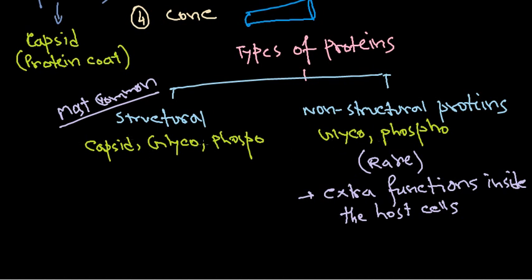If we are talking about most viruses, they generally do not have any non-structural proteins. Usually they only have structural proteins which are making the capsid. The unit of the protein is called capsomere, and they are organized to provide the capsid.